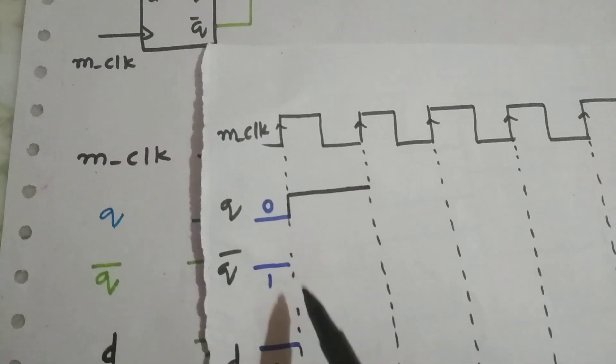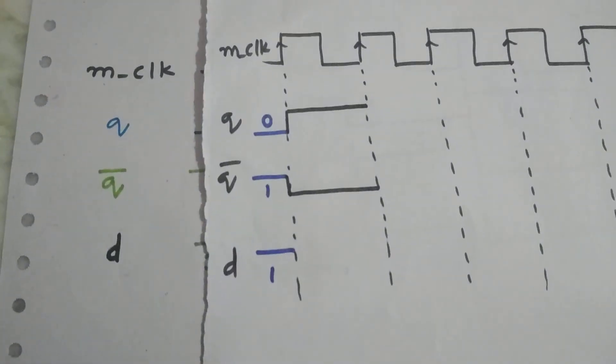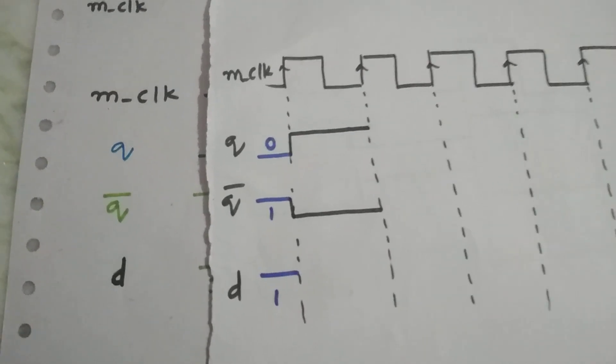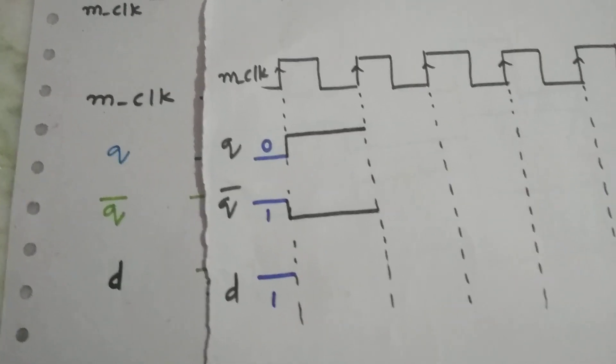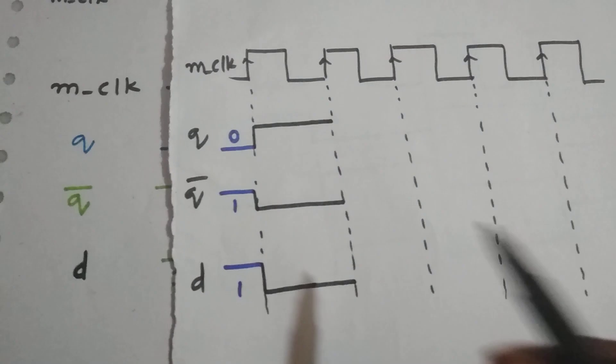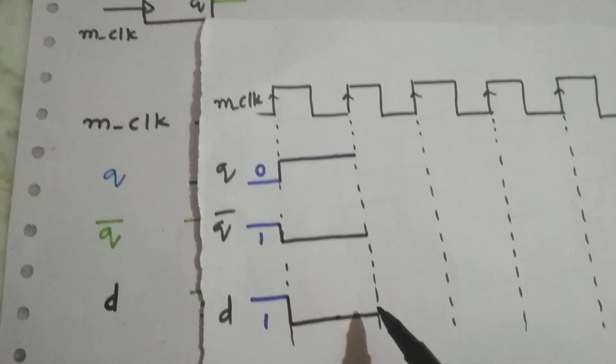So when Q is 1, the Q bar will be opposite of Q. So Q bar is 0. Since the Q bar value is fed into D, D will also be 0.